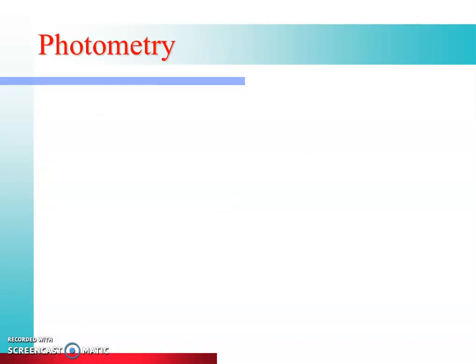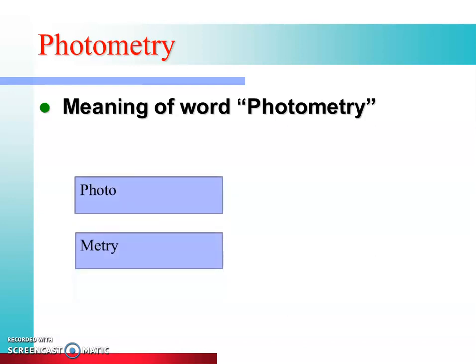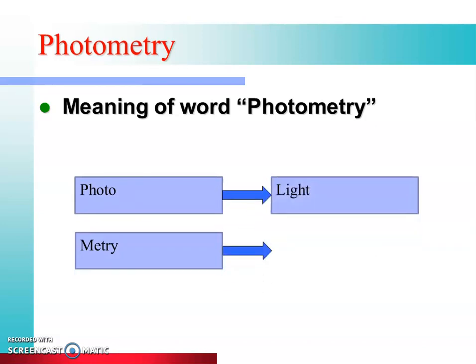First we will discuss about photometry — the meaning. Before going in depth, we will first discuss about the meaning of the word photometry. अगर हम photometry word को दो हिस्सों में divide करें: first word 'photo' and second word is 'metric'. Photo का meaning होता है light, और metric का meaning होता है measurement। याने photometry का meaning होता है measurement of light — याने light को मापना।